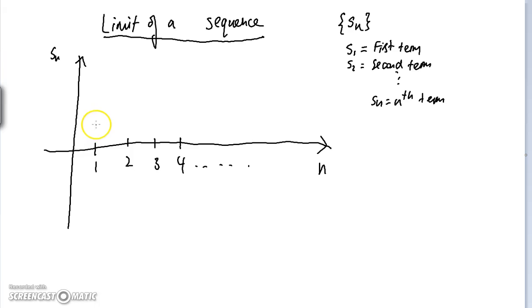So this line represents s of n, and we see that s of 1 maybe it's some number over here. s of 2, that's s of 1 over here. s of 2 might be over here. Maybe s of 3 is over here. And suppose the sequence is getting closer and closer to some number. Let's say it's getting closer to this number over here, whatever it is. Let's say it's 0.1.